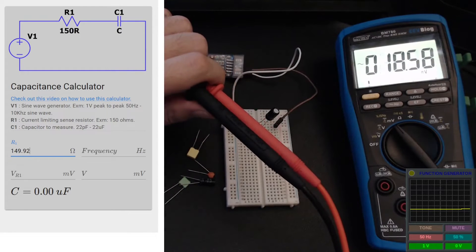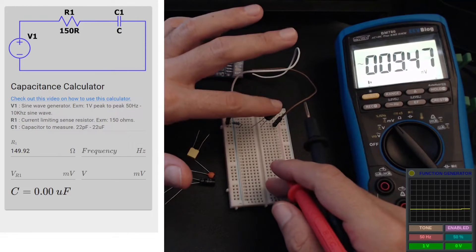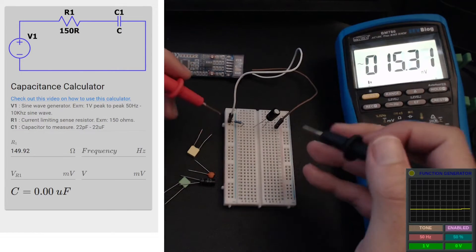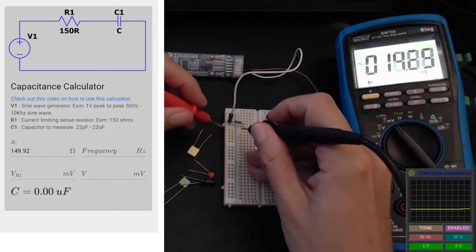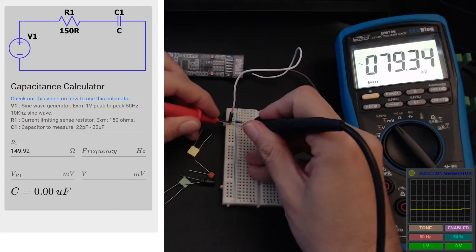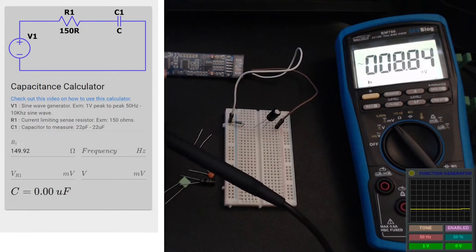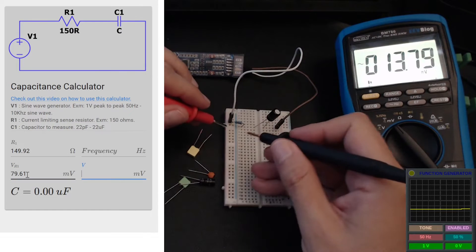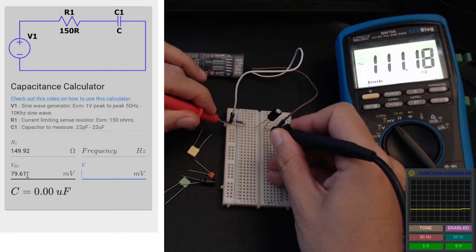Once we do that, I will switch to AC voltage readings in millivolts range and I need to turn on the signal generator. We'll start with 50 hertz - 50 hertz is good for measuring in the microfarads range, but we will gradually increase the frequency as we measure smaller caps. The first thing that I want to measure is the voltage across our resistor - it's 79.61 and I will input that into our tool.